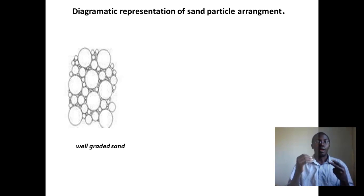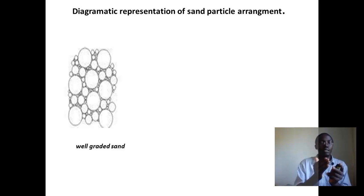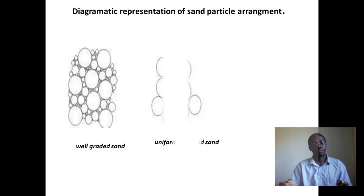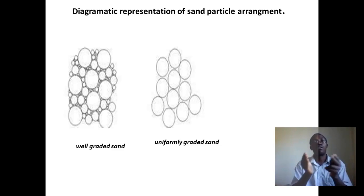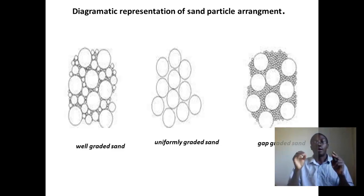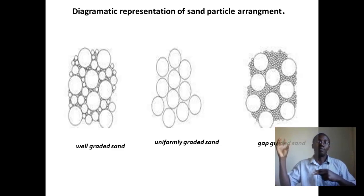Looking at the diagrammatic representation of sand particle arrangements: if the sand sample is well graded, it will have bigger particles, medium particles, and smaller particles — a range of particle sizes. If the sand is uniformly graded, it has only one type of particle size, where the particles are almost all the same. Gap graded means it has bigger particles and very small particles but no particles in between.